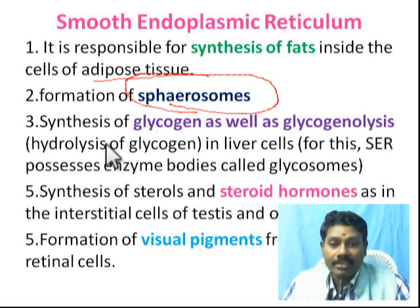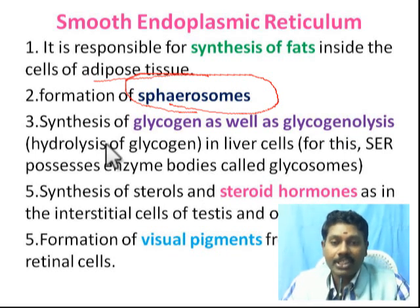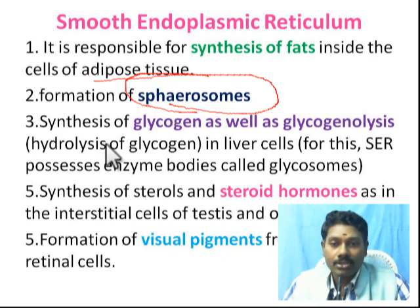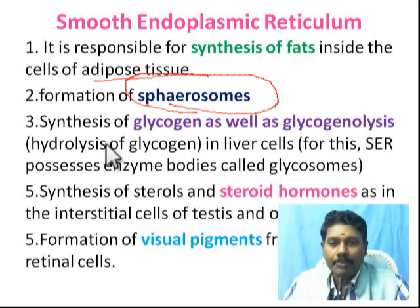Smooth ER is also present in the testes, especially in the interstitial Leydig cells of the testes and also in the ovary, for the production of testosterone and estrogen hormones — these are steroid hormones. Steroid is a protein along with lipids, so lipid synthesis is essential and smooth ER is the predominant site.